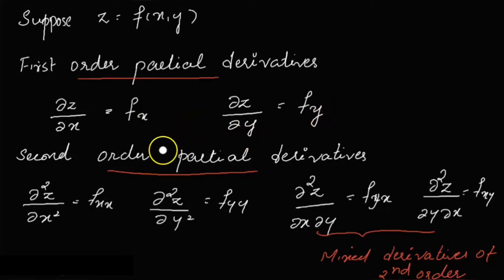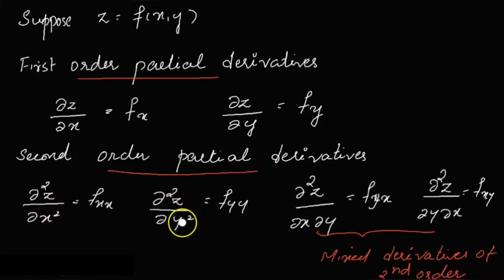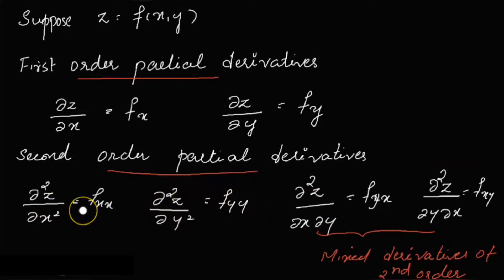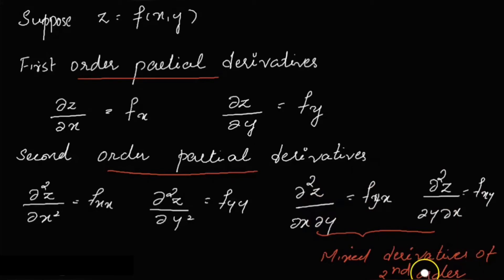The next topic is the second-order partial derivatives. The four second-order partial derivatives are: dou square z by dou x square, dou square z by dou y square, dou square z by dou x dou y, and dou square z by dou y dou x. We denote these as fxx, fyy, fyx, and fxy. The last two are called mixed derivatives of second order, and these two are always equal — we will see that in some examples.